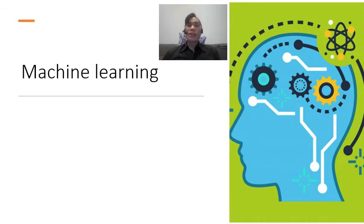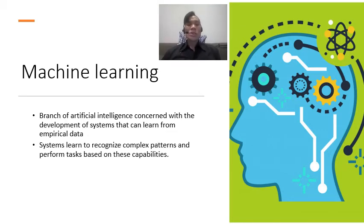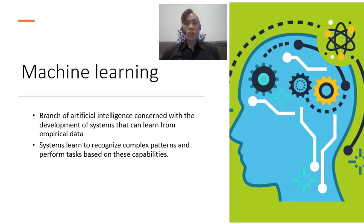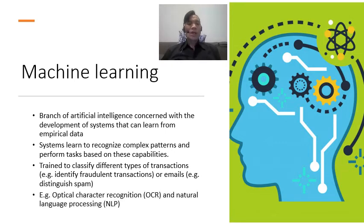Machine learning is a branch of artificial intelligence concerned with the development of systems that can learn from empirical data. Machine learning systems learn to recognize complex patterns and perform tasks based on these capabilities — kind of like doing cluster analysis again and again as new data is added. You can train it to classify different types of transactions, for example to identify fraudulent transactions or emails, and distinguish what is spam and what is not. Two different types of machine learning are optical character recognition (OCR), which identifies symbols and meanings, and natural language processing (NLP), which you will learn about in the sentiment analysis and text analysis lecture.